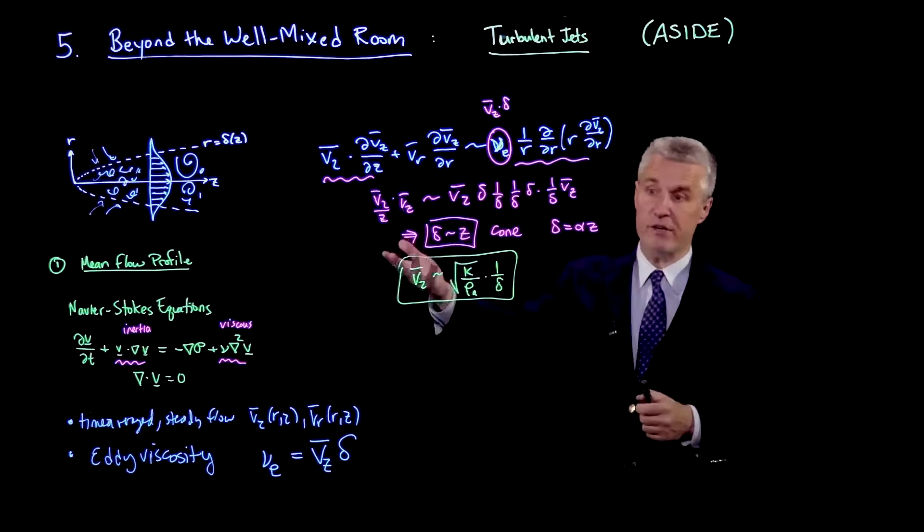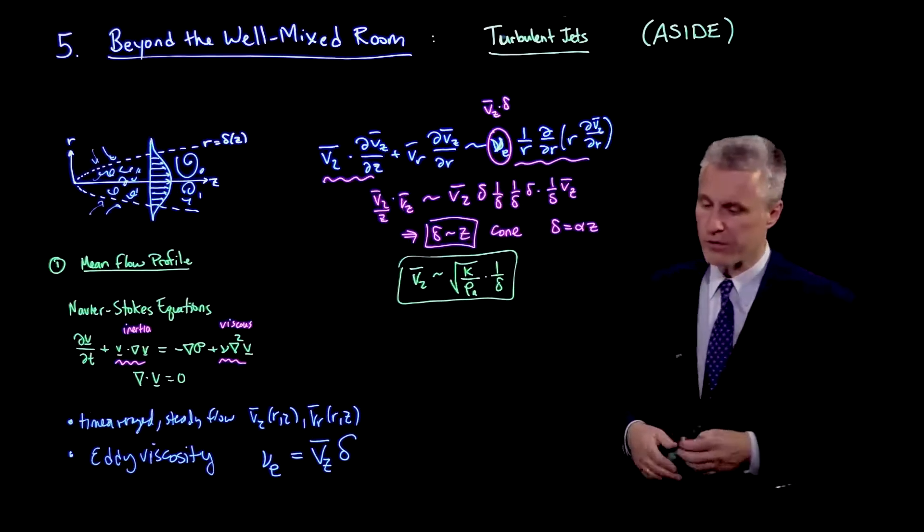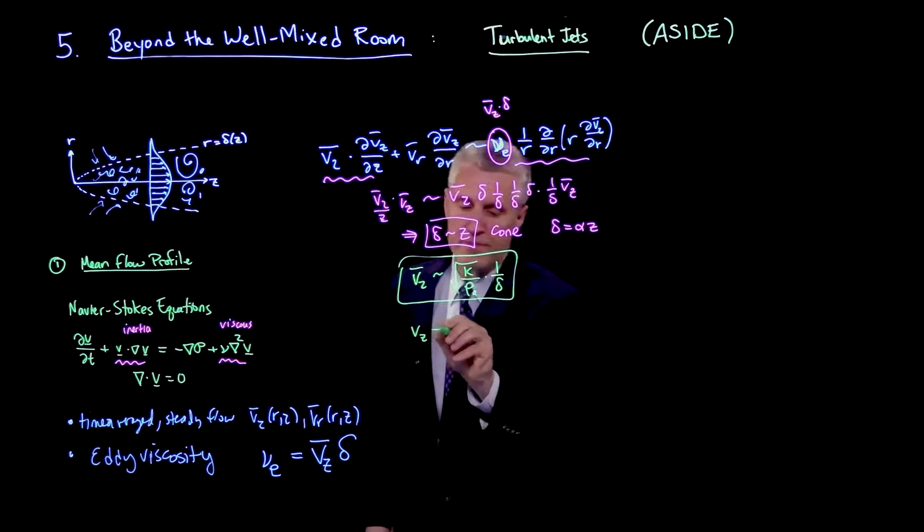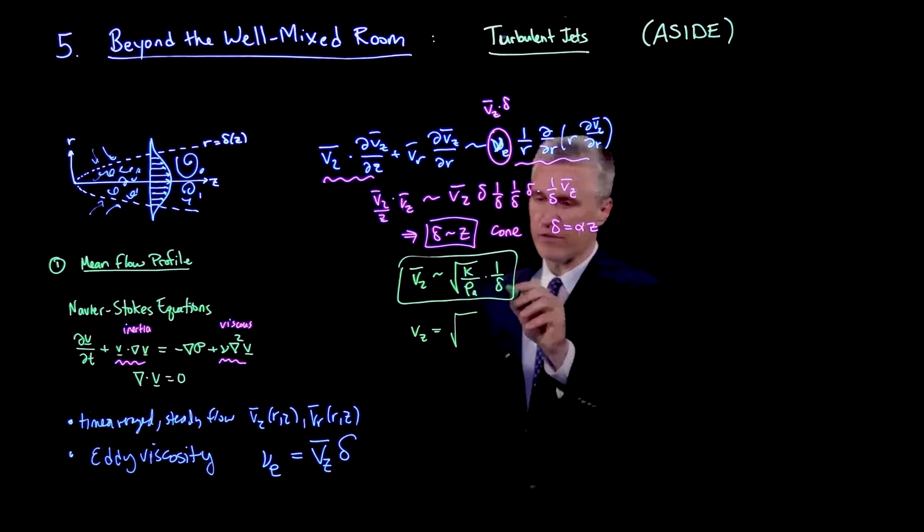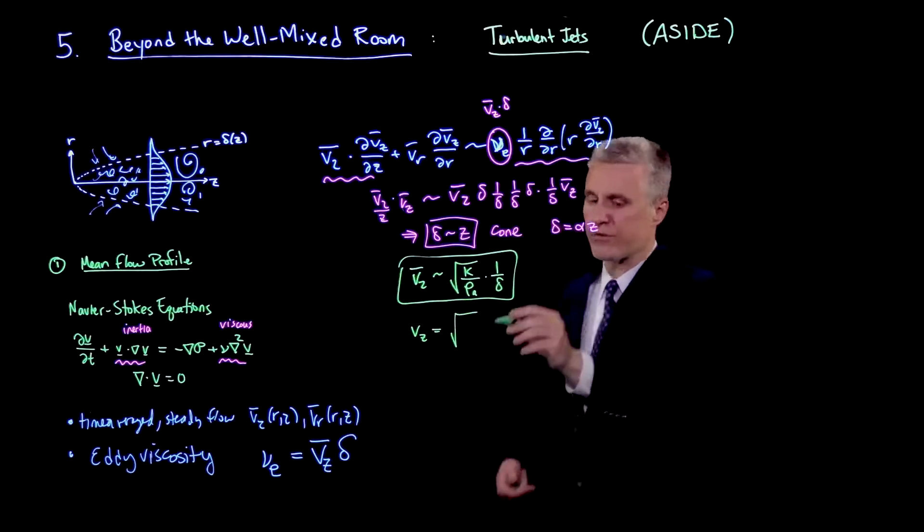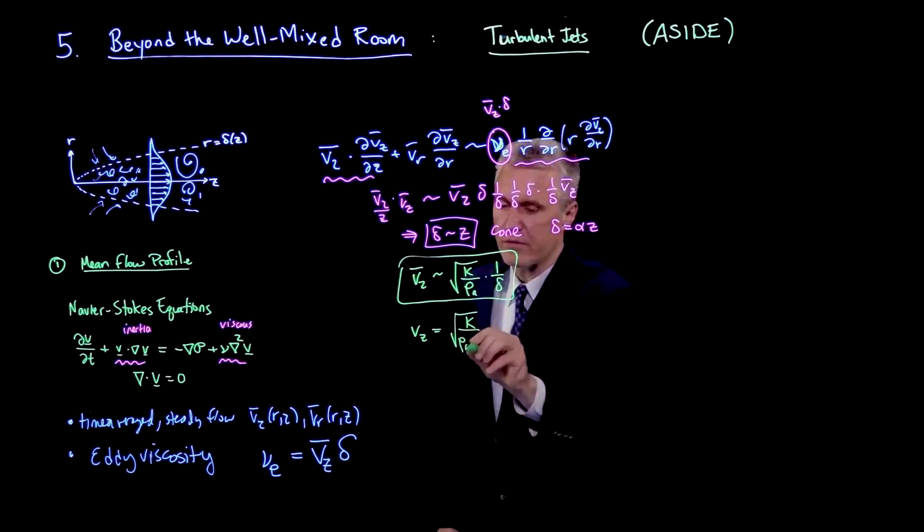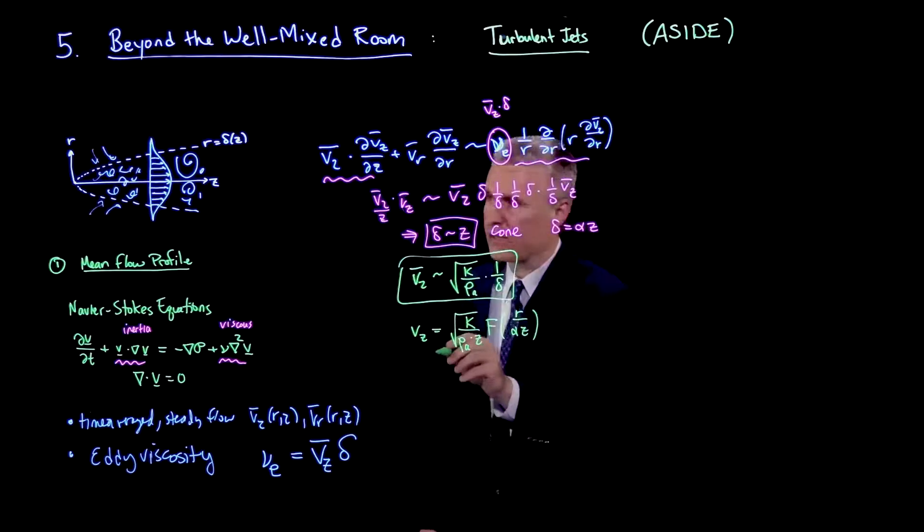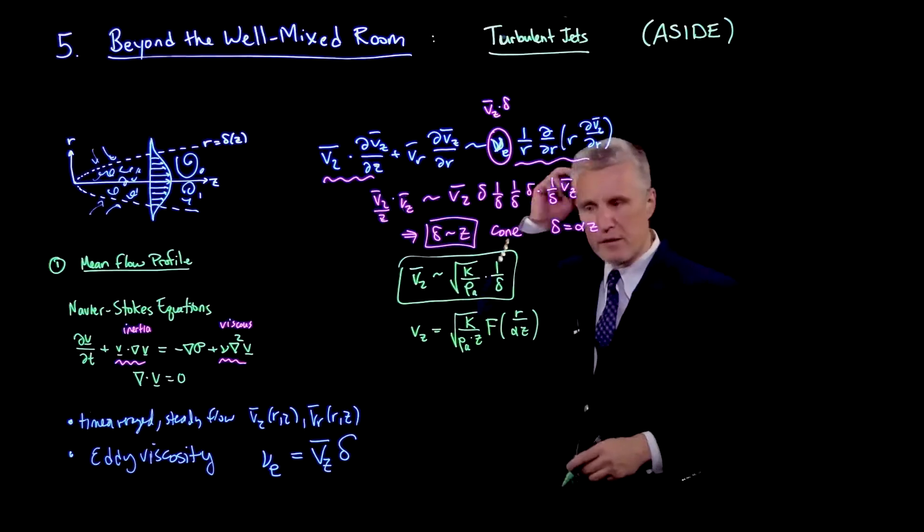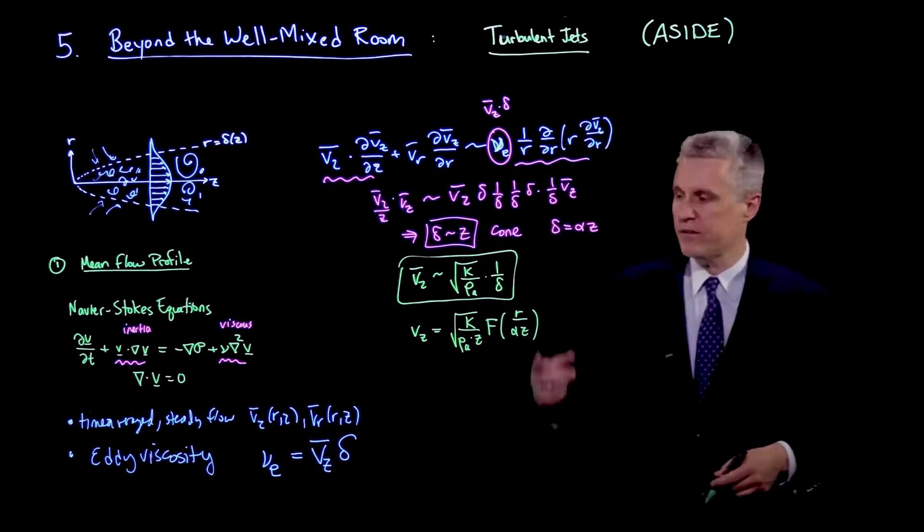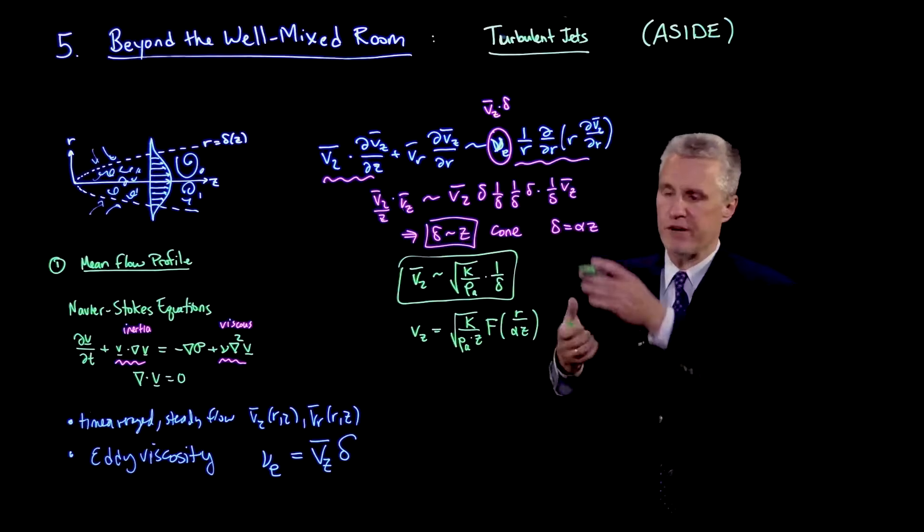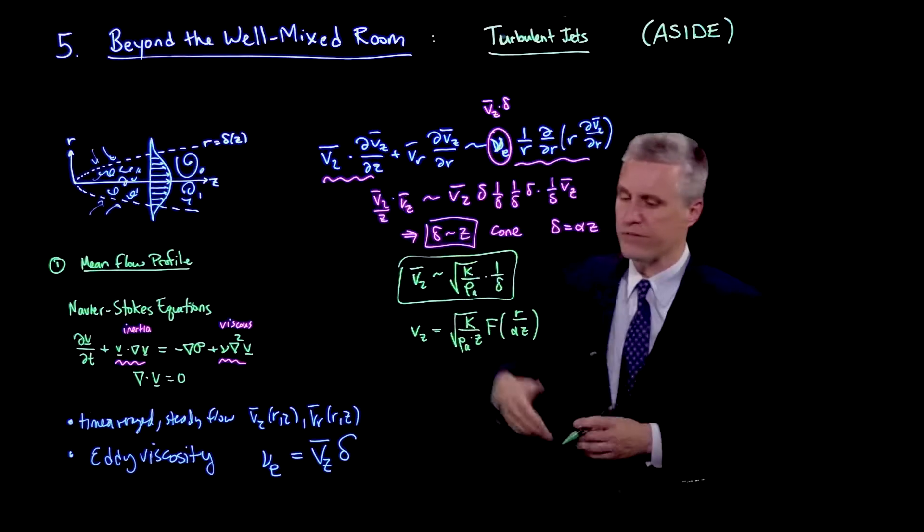In fact, there is a similarity solution for the shape of this profile that one could solve for, and it has the form that, for example, the vz is square root of, because delta is proportional to z, so it's square root of k over rho az times some function of r over alpha z. And then there's a similar expression for the other velocity component. And the function f looks very much as I've sketched here. It's essentially a Gaussian-type profile or a bell curve that kind of localizes the velocity across this distance delta.